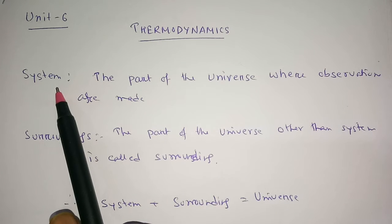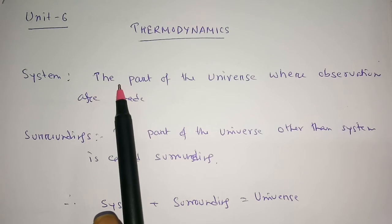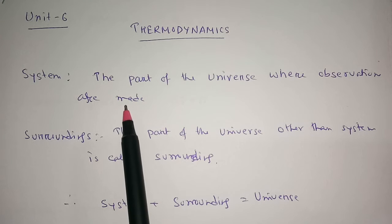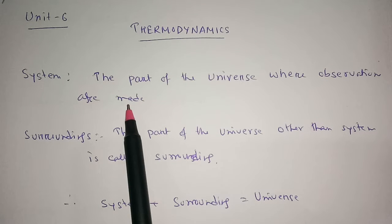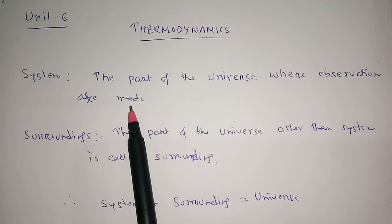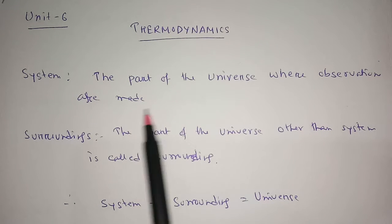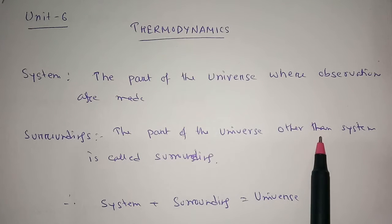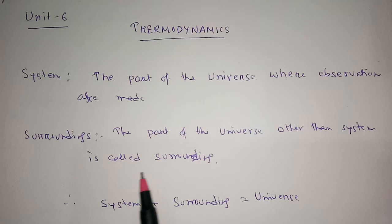In thermodynamics, first of all we define the system — the part of the universe where observations are made. The human body or human beings are also a system. Now if you have a fever, tablets are given to observe the changes in your body. The part of the universe where the observations are made is your system. The part of the universe other than the system is called the surrounding.